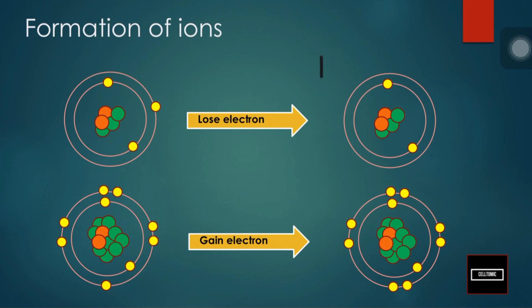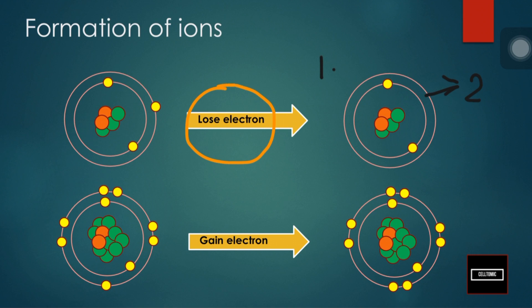Let's look at this particular ion. We can see that this ion has an electron shell of two electrons. Since this is the first shell, and the first shell can only hold two electrons, it has a full valence shell. They achieve this by losing an electron — so this electron here is lost.